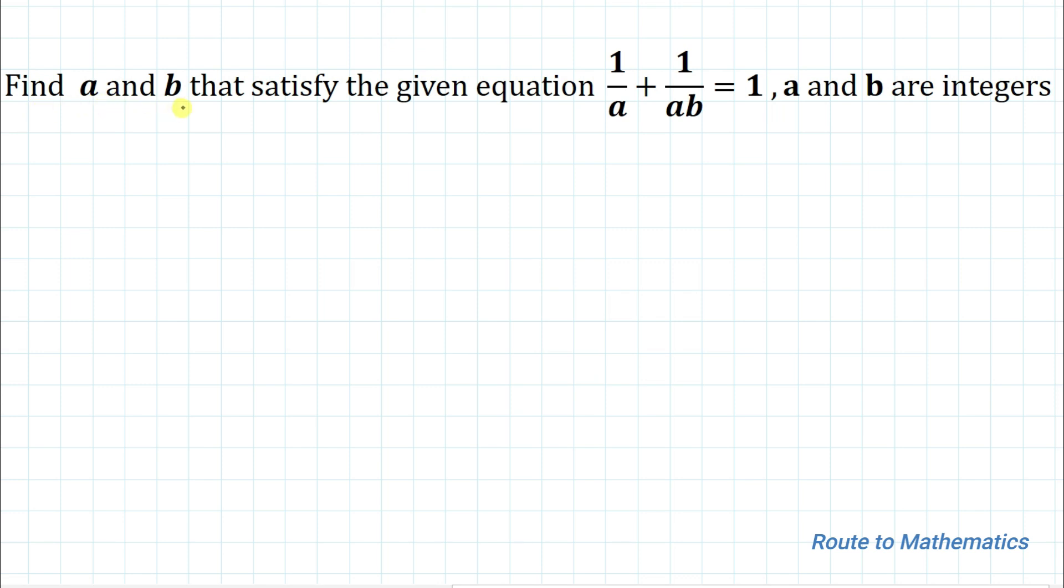So here we have given find a and b that satisfy the given equation 1/a + 1/ab = 1 where a and b are integers. So here we have given an equation and we are asked to find the values of a and b, and we are also given a condition that a and b are integers.